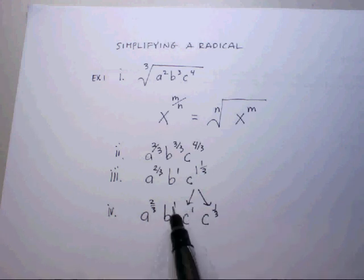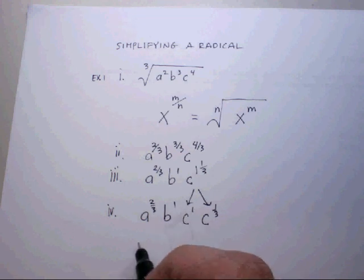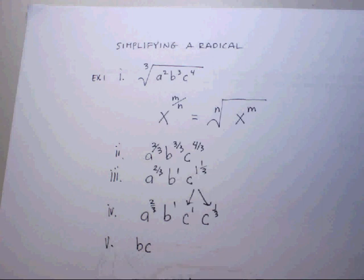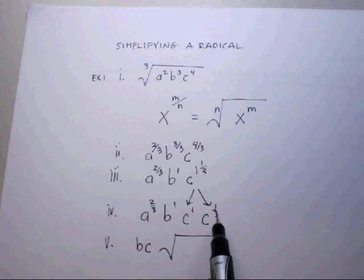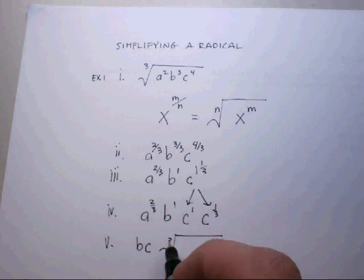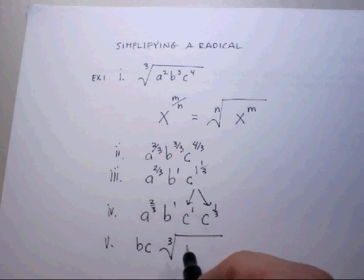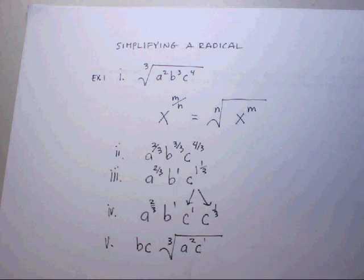Any base that has a whole-numbered exponent gets to go outside the radical. These guys have the same index because, remember, the denominator is the index. And then these numbers are the exponents. So I'm going to say a to the 2nd, c to the 1st.